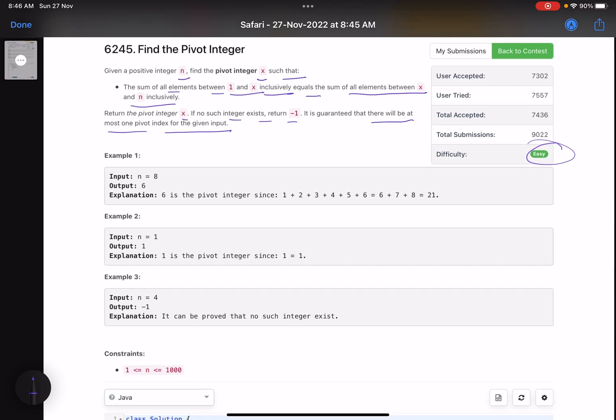Let's see what it wants to say. In this case, n is 8. A pivot integer is a number such that sum of numbers from 1 to that integer x equals the sum of x to n. For example, 6 is the pivot integer. 1 plus 2 plus 3 plus 4 plus 5 plus 6, you can see it here, the sum of these 6 integers equals the sum of 6, 7 and 8. So 6 is your answer in this case.